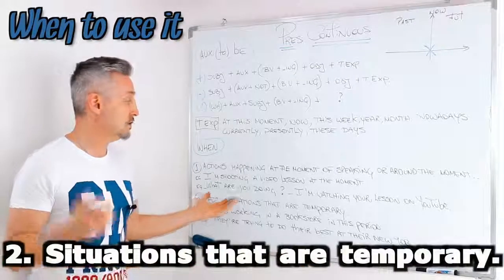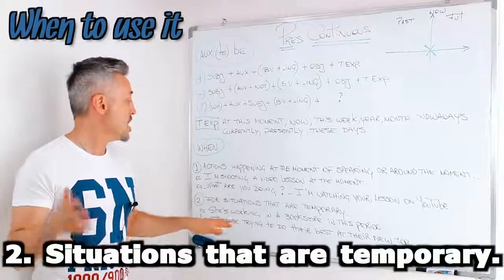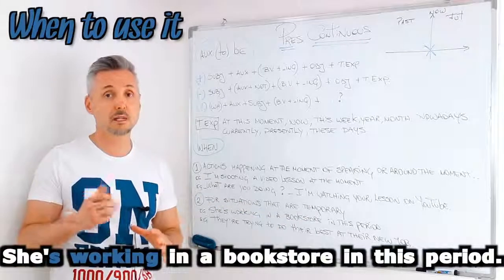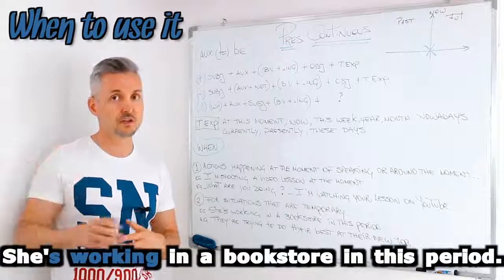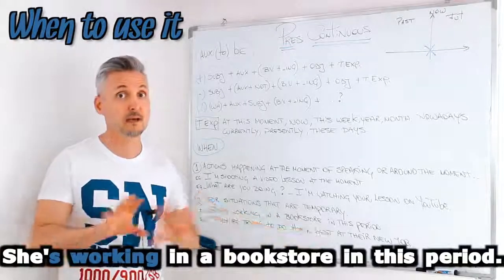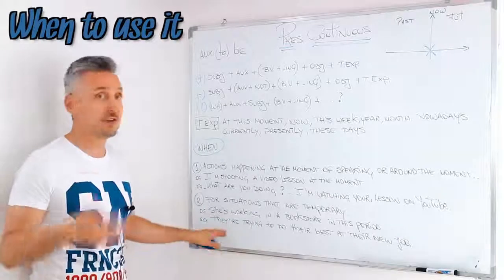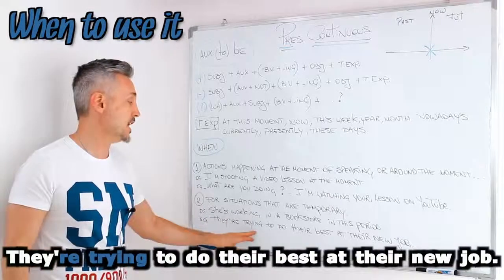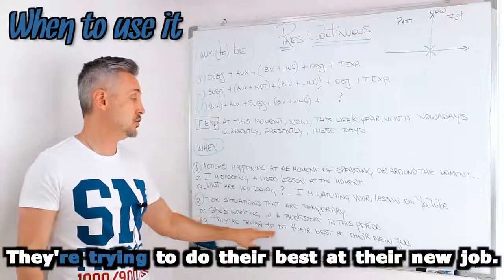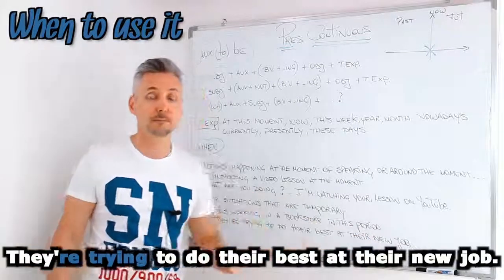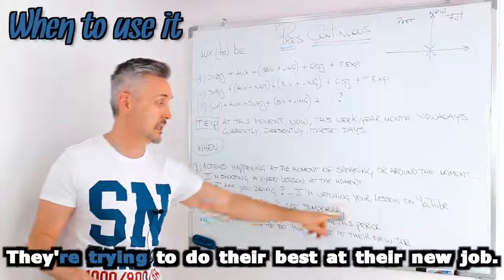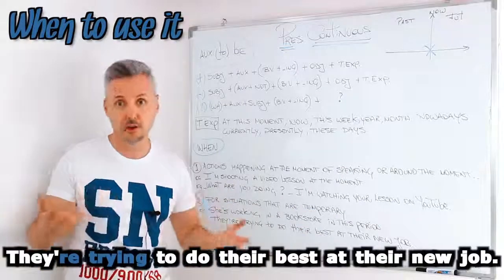The second usage is for situations that are temporary. For example, she's working in a bookstore in this period. Maybe in the past she worked somewhere else, and in the future she's working as a teacher, for example. So: she's working in a bookstore in this period — temporary. Or they have a new job, and so they say they're trying to do their best at their new job. Because in the past they worked somewhere else, and now, in this period, because it's temporary, they're trying to do their best at their new job.